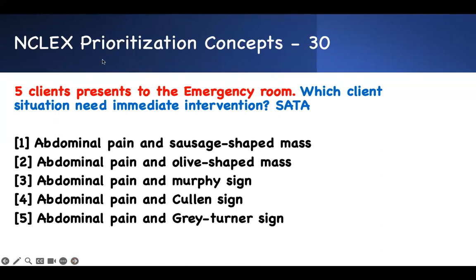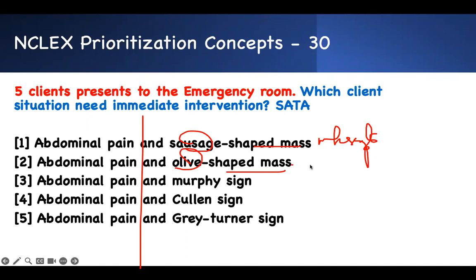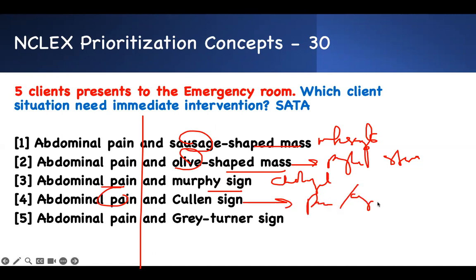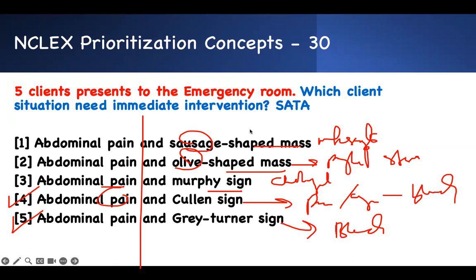Question 30 — five clients in the emergency room, which needs immediate intervention? Abdominal pain with sausage-shaped mass — intussusception, causing ischemia — see this patient. Abdominal pain with olive-shaped mass — pyloric stenosis — treat but less urgent. Abdominal pain with Murphy's sign — cholecystitis. Abdominal pain with Cullen's sign — periumbilical ecchymosis, related to pancreatitis or bleeding — intervene. Abdominal pain with Grey Turner's sign — flank ecchymosis, also bleeding — intervene. Intervene on clients 1, 4, and 5.